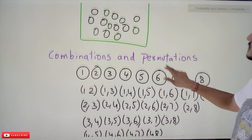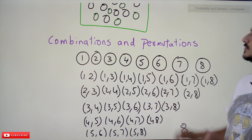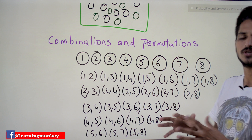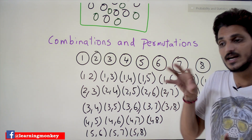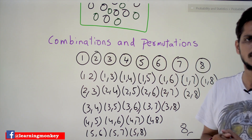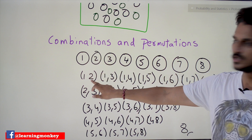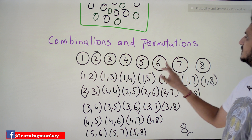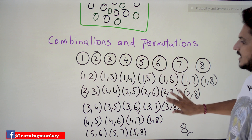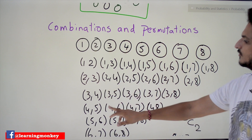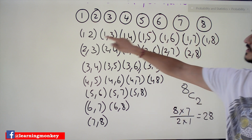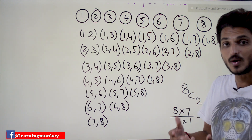In the bag we have eight black balls. For understanding, assume we have numbered them one through eight. How many ways can we select two black balls? That is what combinations means. One-two is one combination, one-three is another, one-four, one-five, one-six, one-seven, one-eight; then two-three, two-four, two-five, two-six, two-seven, two-eight; similarly three-four through three-eight; four-five through four-eight; and finally seven-eight. Total: 28 combinations.